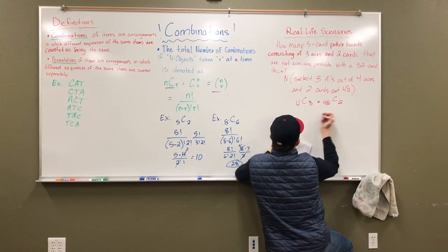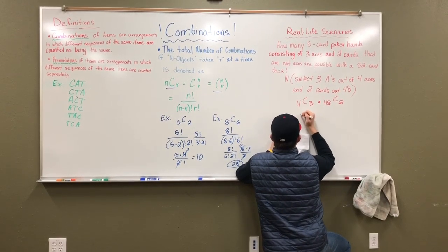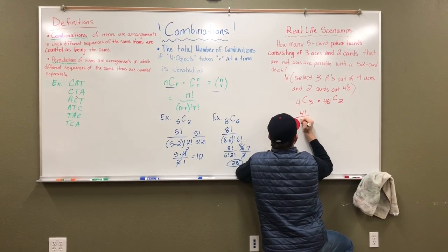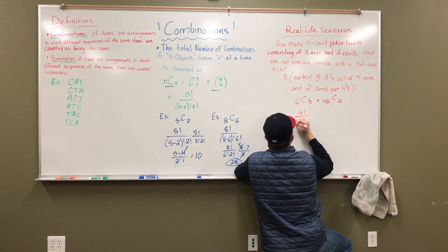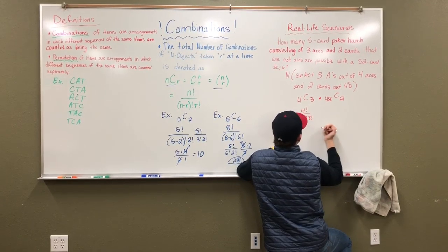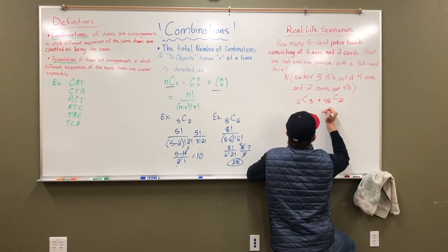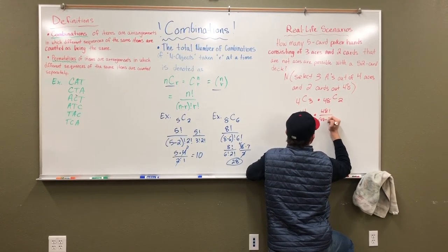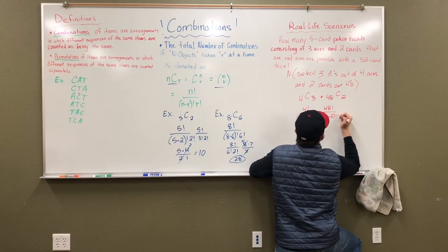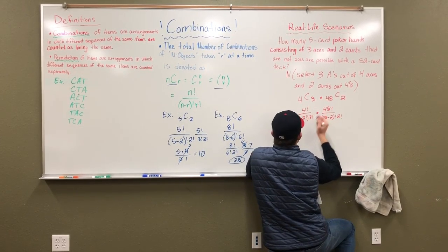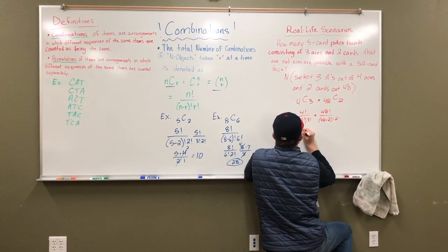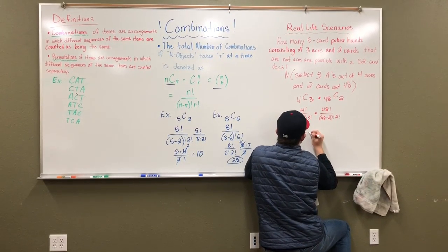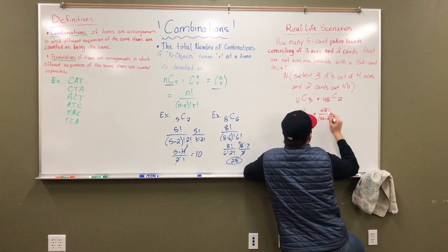So now seeing that, we basically just put in the formula and then we'll multiply them. So we have four factorial over four minus three factorial times three factorial times 48 factorial over 48 minus two factorial and two factorial. So we'll expand that. So we're going to get four over one times three factorial times 48 times 47 over two factorial.